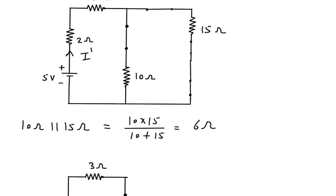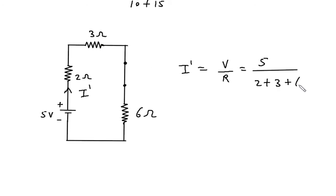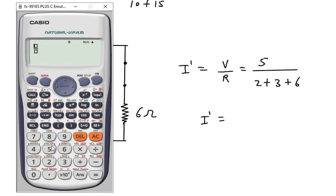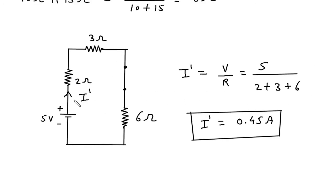Now we can easily find I prime by using Ohm's law. I prime is equal to V by R. V is 5 volt and R is 2 plus 3 plus 6. So I prime is equal to 5 divided by 2 plus 3 plus 6, which is 0.45 ampere. The direction of this I prime is upward.